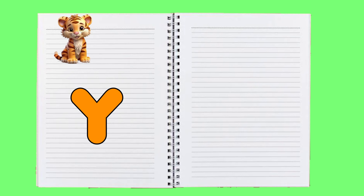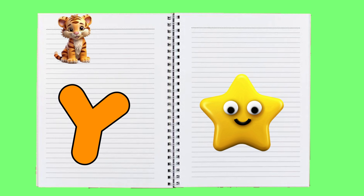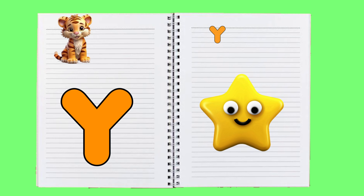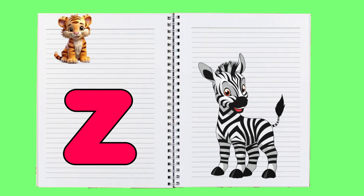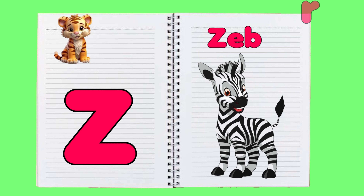Y is for yellow, ye-ye-yellow. Z is for zebra, z-z-zebra.